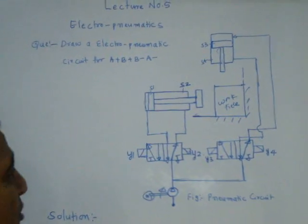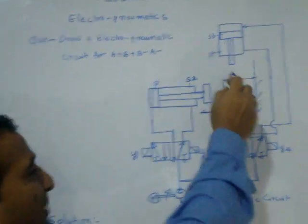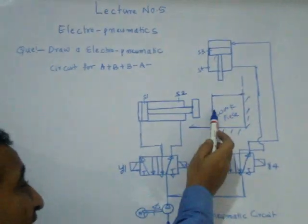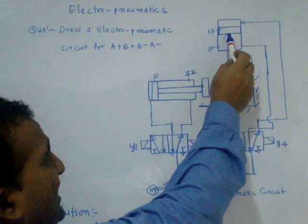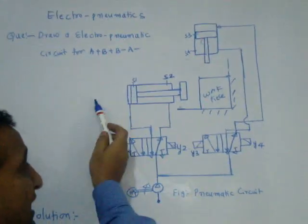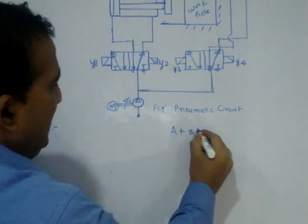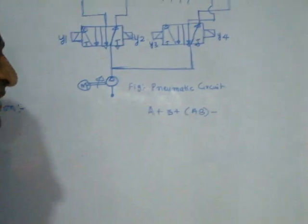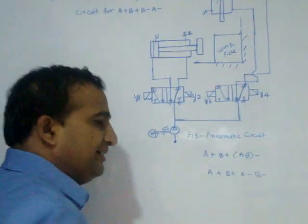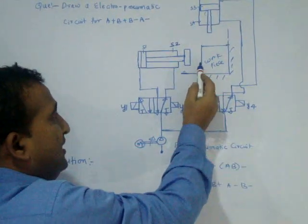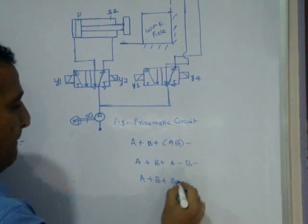The question is: in this process, the first cylinder holds the workpiece and the second cylinder drills and goes back. When the second cylinder goes back and confirms to the first cylinder that it has returned, then the first cylinder goes back. There are at least three types of problems. The first — A plus, B plus, A minus, B minus at the same time — is easy, already covered in the previous lecture. A plus, B plus, A minus, B minus in sequence is also easy.